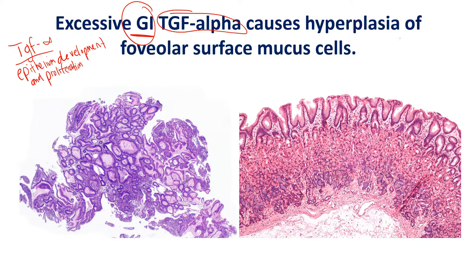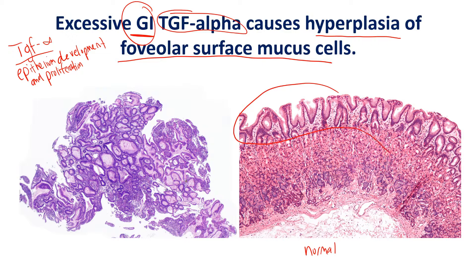So how does that present? It presents with hyperplasia of the foveolar surface mucous cells. If you look at these pictures over here, on the right is the normal stomach. You can see the organization — at the very top are cells that produce mucus to protect the stomach from the acid produced by cells in the deeper layers, the parietal cells and so on. These foveolar cells undergo hyperplasia because TGF-alpha causes epithelial proliferation and differentiation.